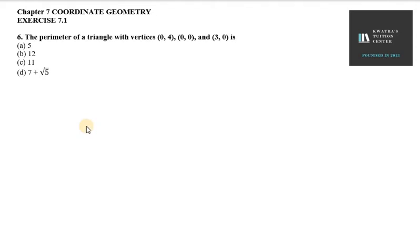Hello everyone, let's start with the next question, that is question number 6. It says the perimeter of a triangle with vertices (0, 4), (0, 0), and (3, 0) is.